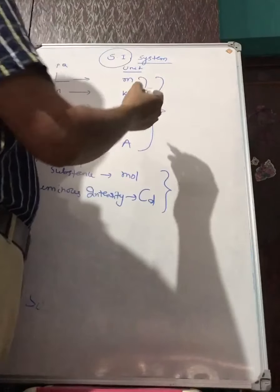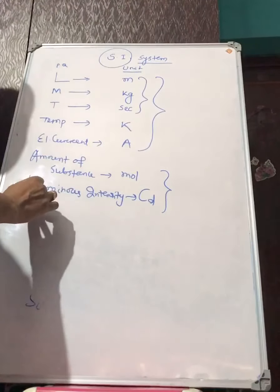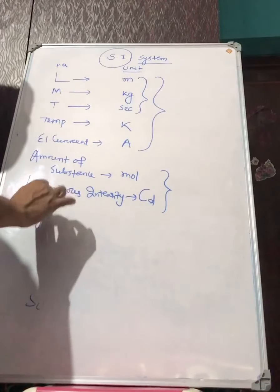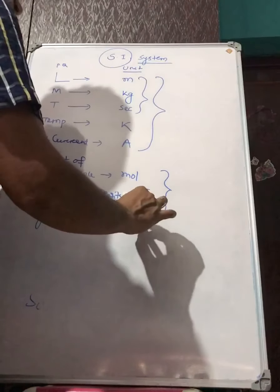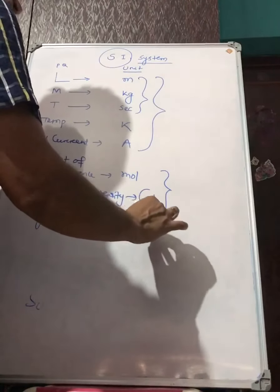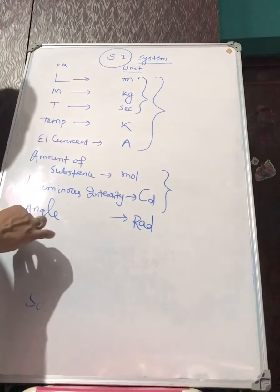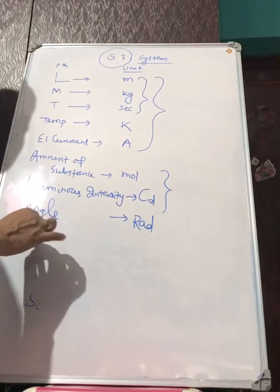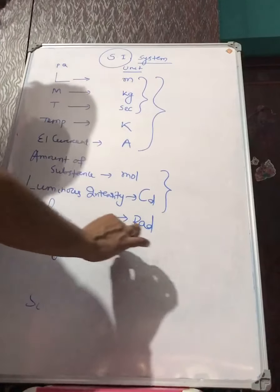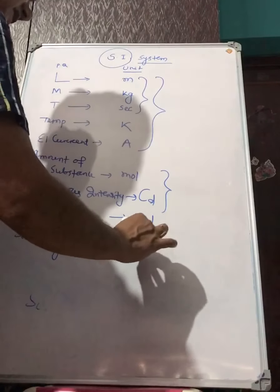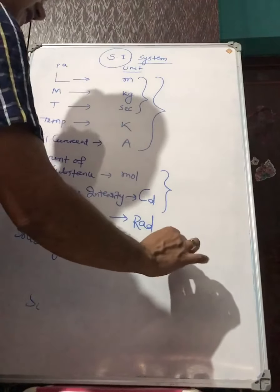For the supplementary fundamental physical quantities, for plane angle the unit is radian (rad), and for solid angle the unit is steradian (sr).